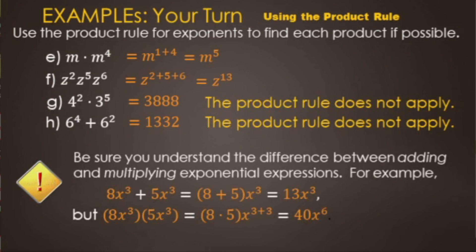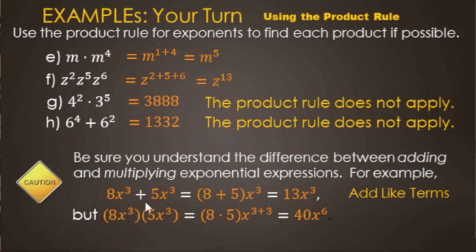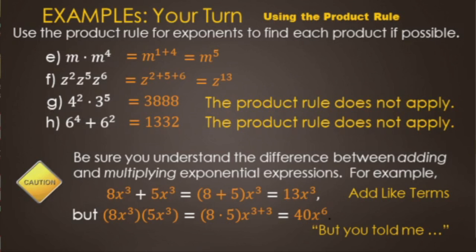A common misconception: when we go from multiplying to adding, the rule changes. If we have eight x to the third plus five x to the third, that's adding like terms — the answer is thirteen x to the third. But if it's multiplication, like eight x to the third times five x to the third, we do eight times five to get forty, and x to the third times x to the third gives x to the sixth. So you must pay attention to whether you're adding or multiplying — that's a common mistake.